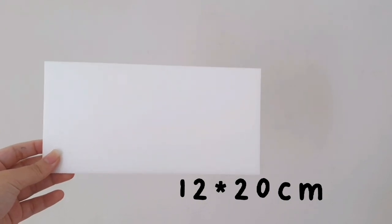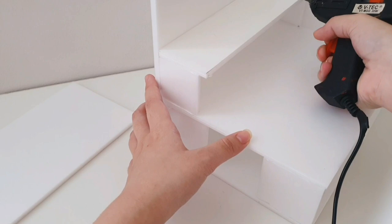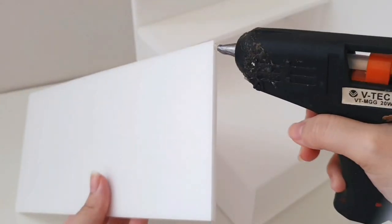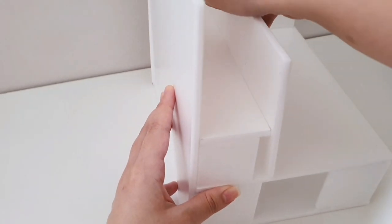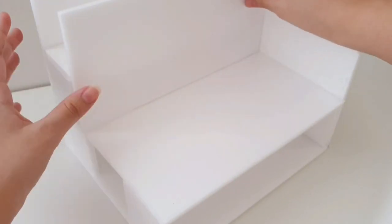Next you want to take the 12x20 cm piece and glue it in front of the platform that you just made. It's kind of hard to explain with words, but if you see the video I'm pretty sure that you'll be able to understand it very well.